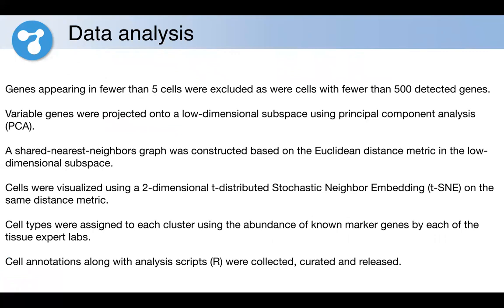Once we aligned and counted the sequencing data, we proceeded with the initial data analysis. We excluded genes that appeared in fewer than five cells and also excluded cells that had less than 500 detected genes. We then selected variable genes based on robust dispersion and performed principal component analysis to project this high dimensional space of variable genes down to a lower dimensional subspace on which we performed the actual clustering. To visualize the results of clustering, we analyzed the same distance matrix using t-SNE and then projected the cell clusters back on this two-dimensional space.